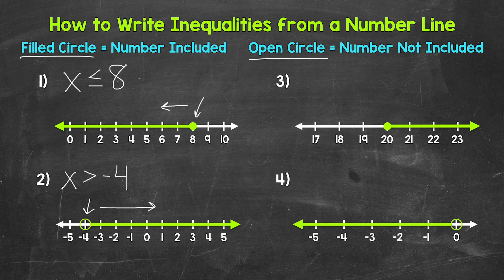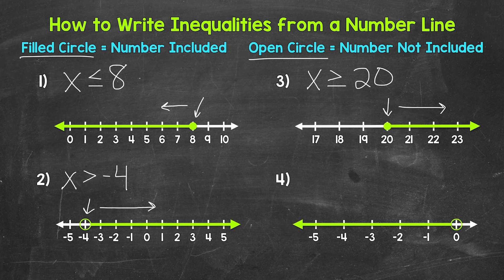Let's move on to number 3, where we have a filled circle at 20 and then an arrow pointing right. So we have all of the numbers greater than 20, and 20 is included — it is a solution. We have that filled circle there. So x is greater than or equal to 20.